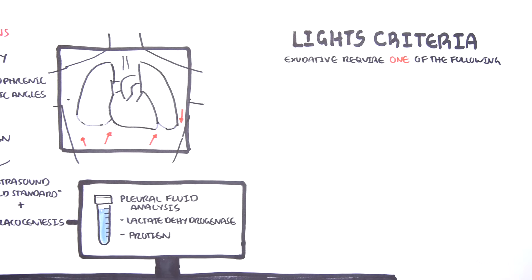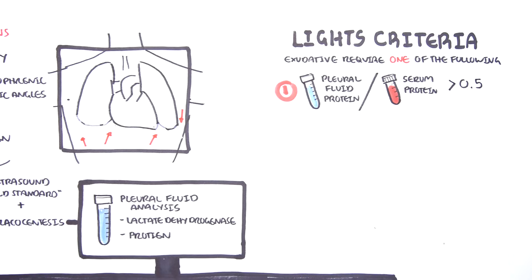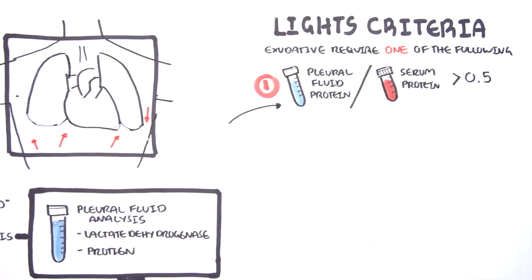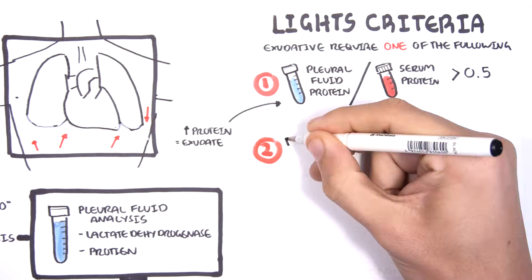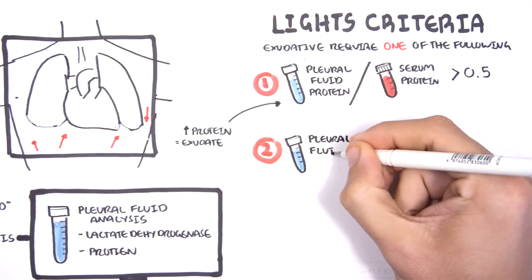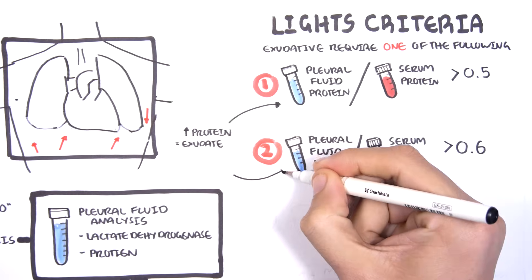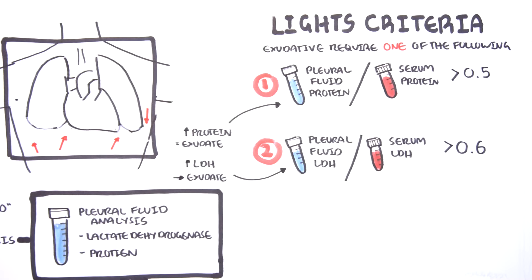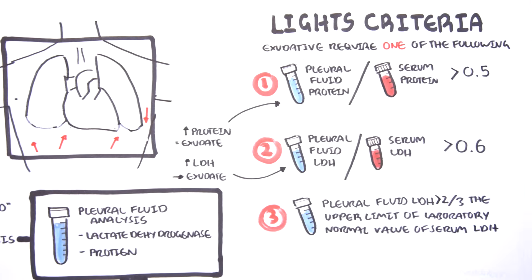Exudative requires one of the following. First, where you have pleural fluid protein to serum protein ratio greater than 0.5, which really means it will be exudate if there is more protein in the pleural fluid. Second, where you have a pleural fluid lactate dehydrogenase to serum lactate dehydrogenase ratio greater than 0.6, which really means it's exudate if the pleural LDH level is higher. Or finally, it is an exudative pleural effusion if the pleural fluid LDH is greater than two-thirds the upper limit of the laboratory normal value of serum LDH.